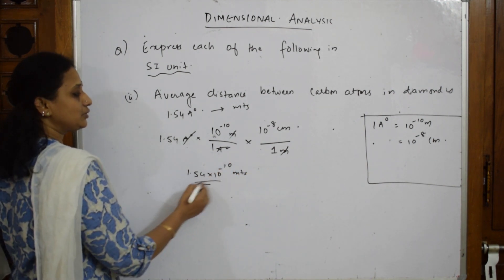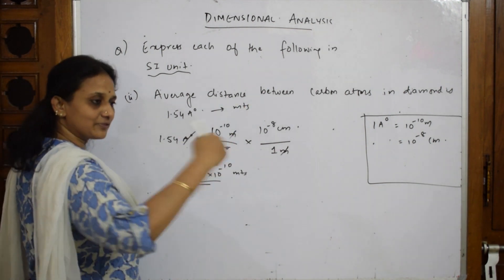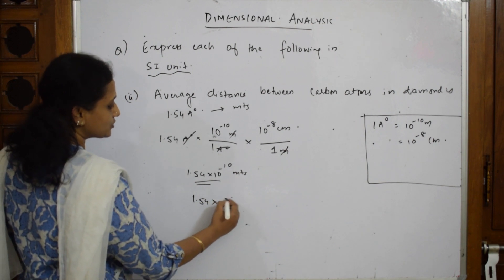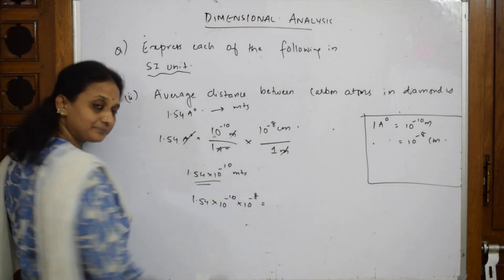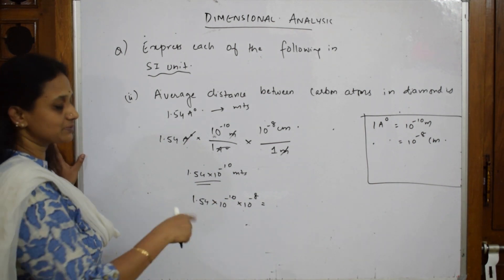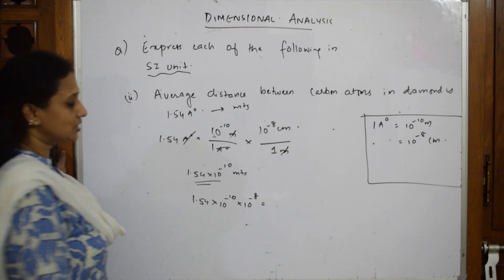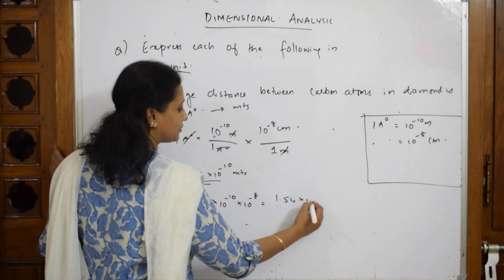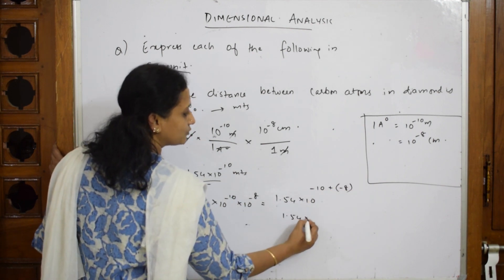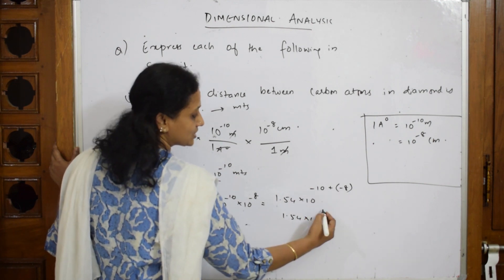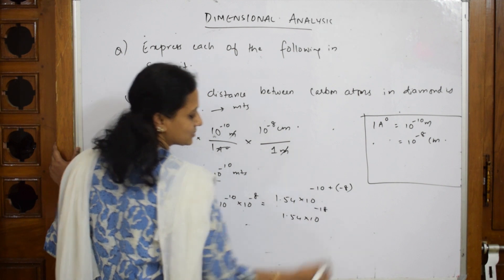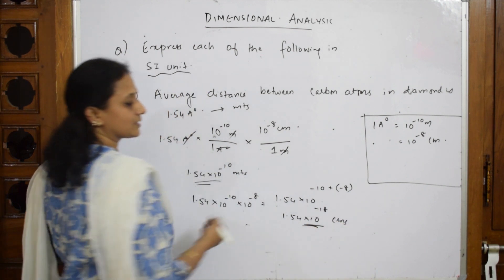If further conversion to centimeters is needed, multiply by the factor: 1 meter = 10⁻² centimeters (i.e., divide by 1 meter, 1 meter = 10² cm, so 1 m = 10⁻¹ ... working through: 1.54 × 10⁻¹⁰ × 10² = 1.54 × 10⁻⁸ centimeters). The bases combine: minus 10 plus 2 gives 10⁻⁸ cm.